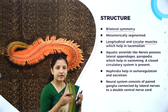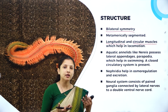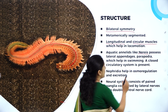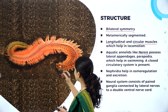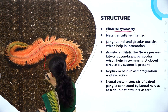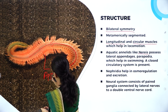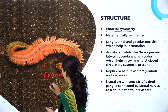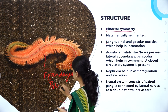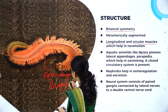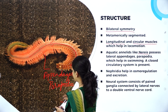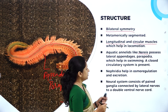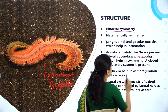Now what about aquatic ones like Nereis? Aquatic annelids have lateral appendages at the side of the body. These appendages are organs which help in movement, and they are called parapodia. Podia means feet, so they act like feet — using them, they can wade through or swim in water. So parapodia help in swimming.